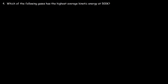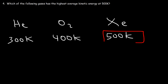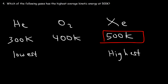For example, consider three gases: helium at 300 Kelvin, oxygen at 400 Kelvin, and xenon at 500 Kelvin. In this case the average kinetic energies will not be the same. Because xenon is at the highest temperature, it will have the greatest average kinetic energy. Helium will have the lowest average kinetic energy because it's at the lowest temperature. So average kinetic energy of a gas depends only on temperature — that's the key takeaway.